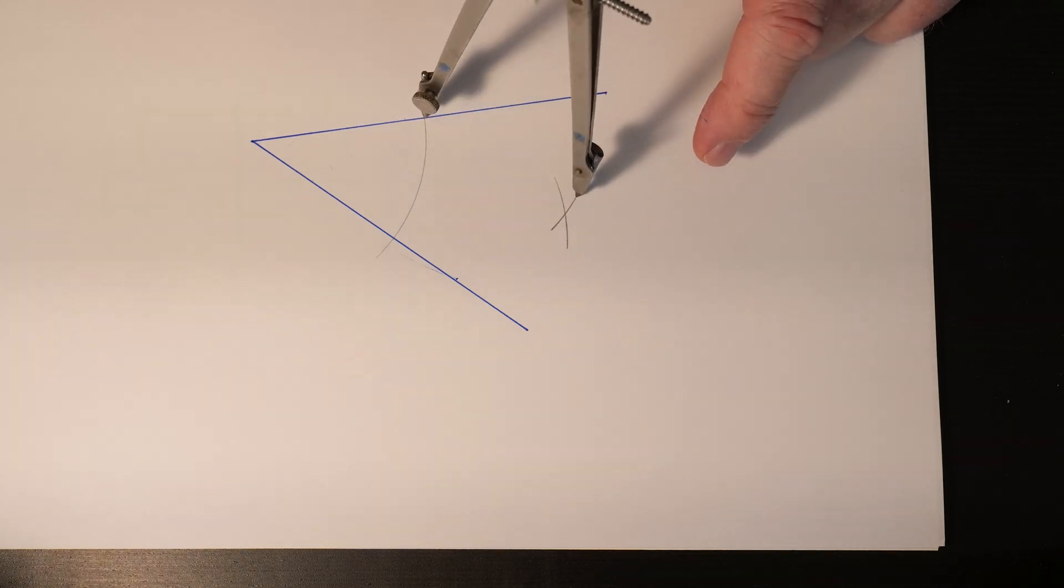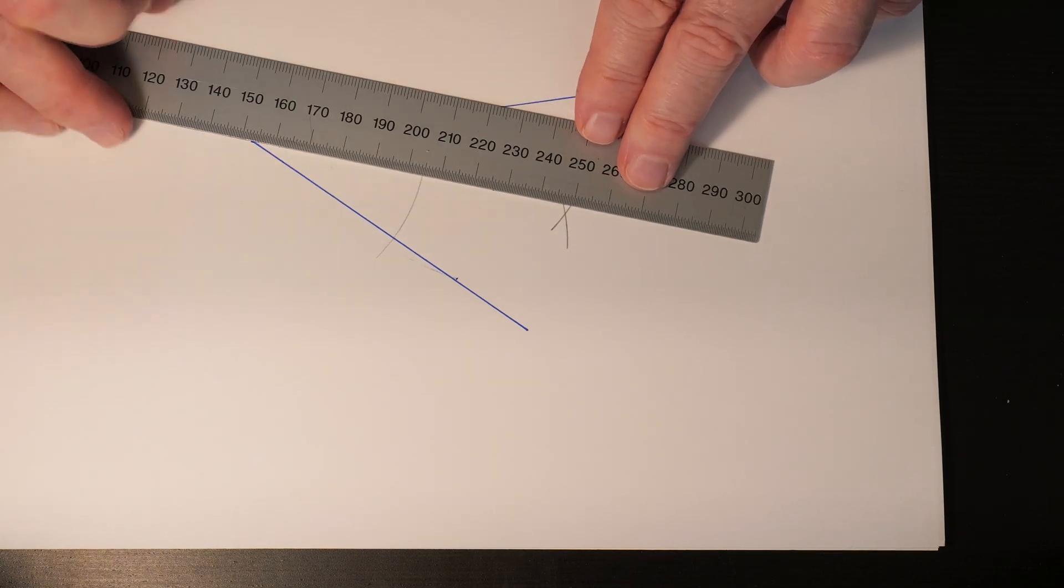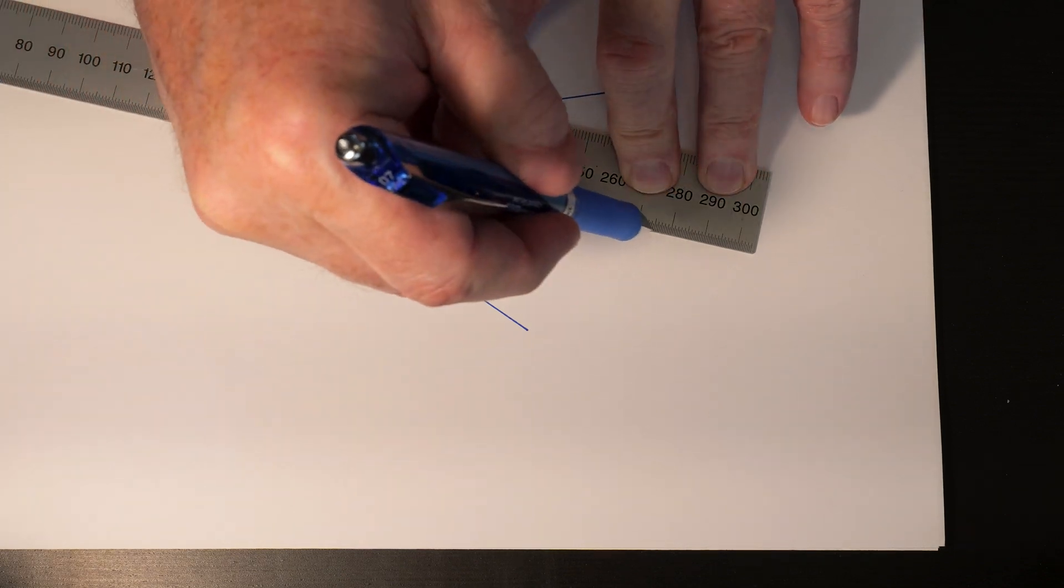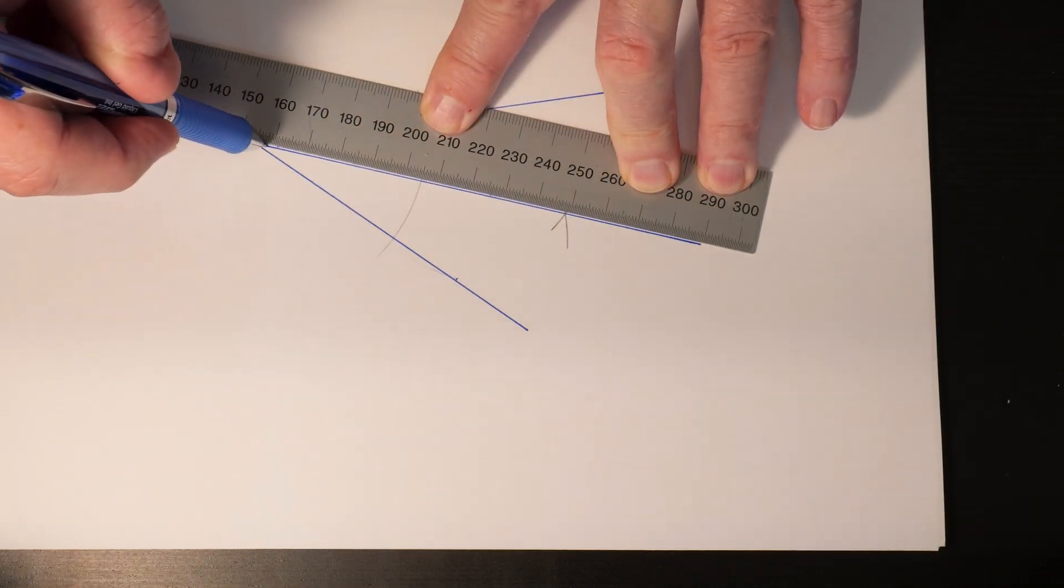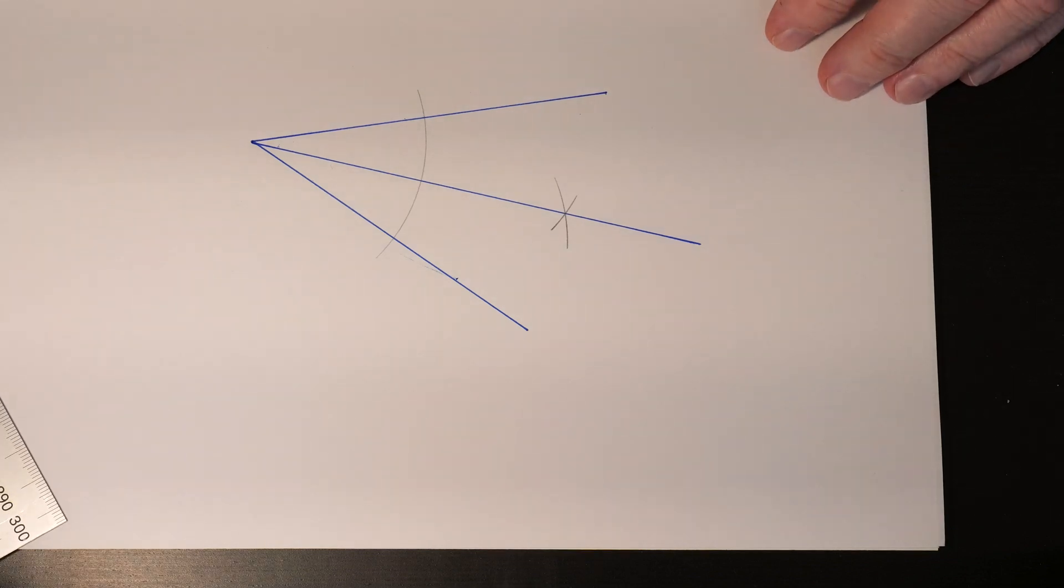Now to find the bisection of that angle, you're going to connect the point and the intersection of those two arcs. This is a whole lot easier than trying to figure out how to use a protractor and do the math. It's just a real convenient, guaranteed accurate way to bisect an angle.